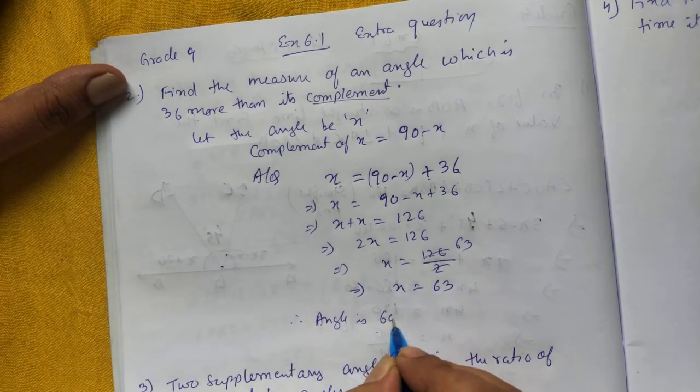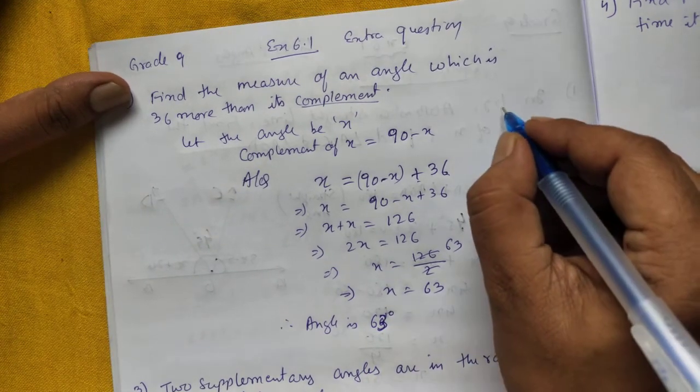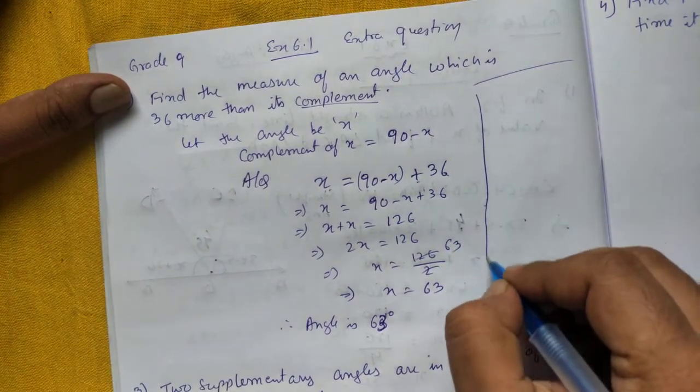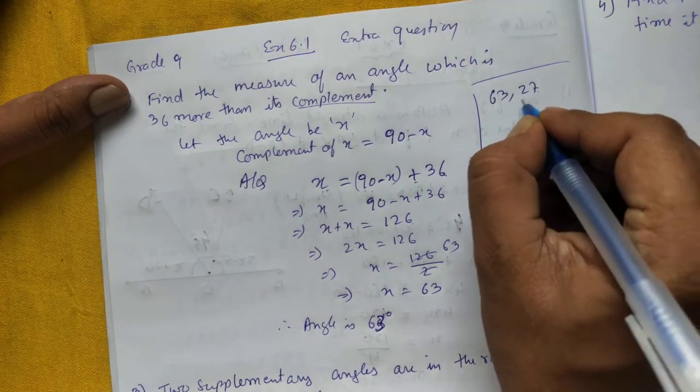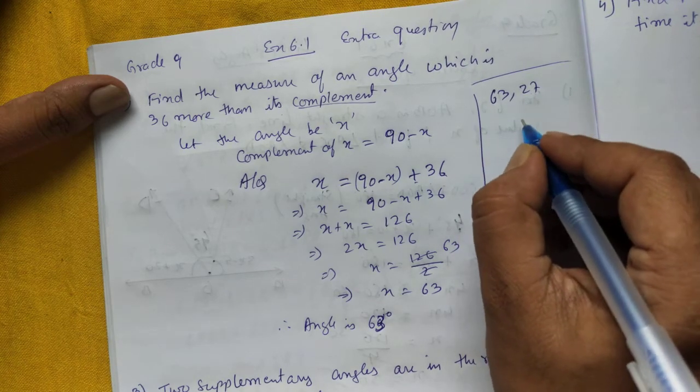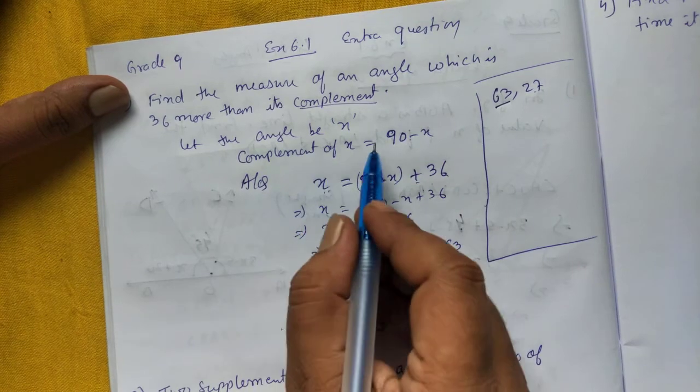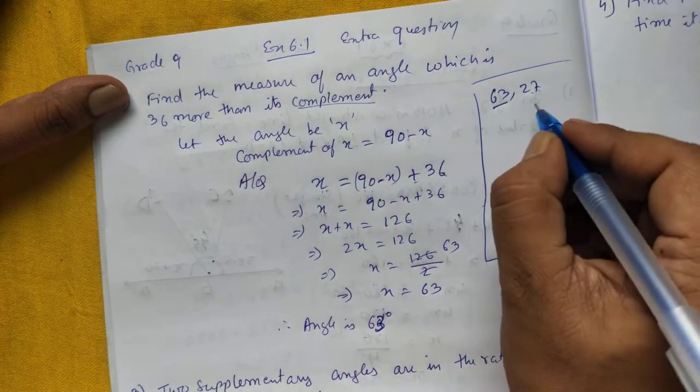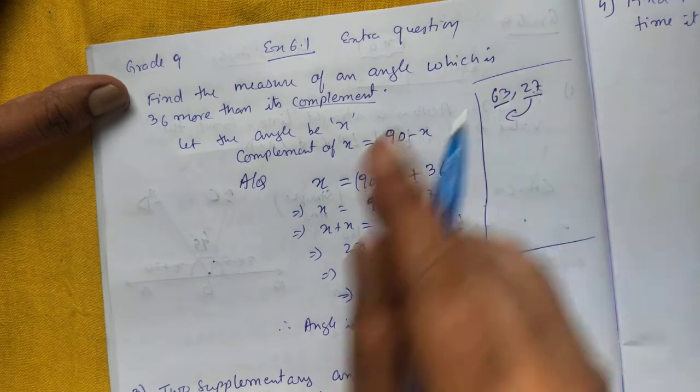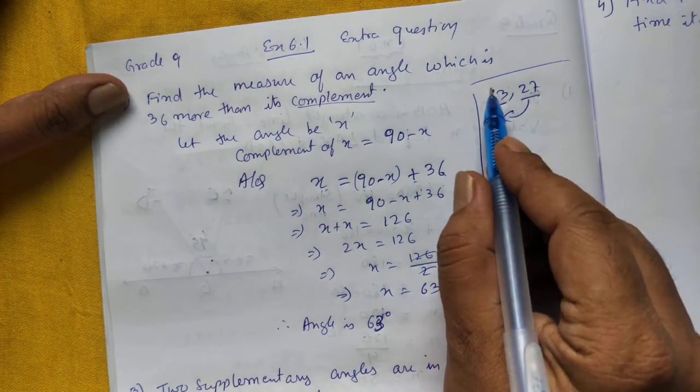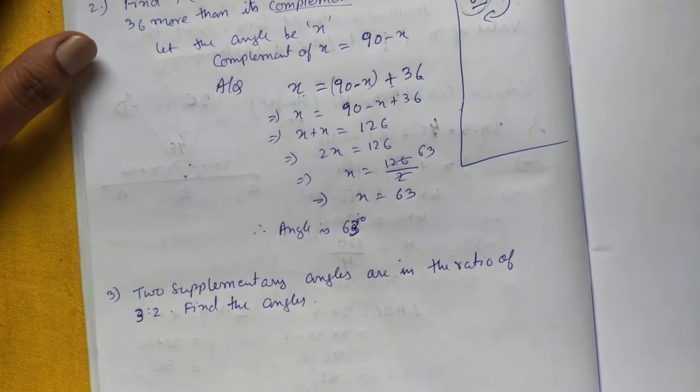Now if you find the complement of 63, whether your answer is correct or not. Complement of 63 will be 27 because total is 90 degrees, complementary angle. So complement of 63 is 90 minus 63, we will get 27. And if you check, this angle 63 is 36 more than 27. So your answer is correct. Let us go to the next question.